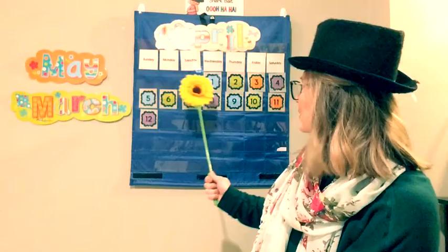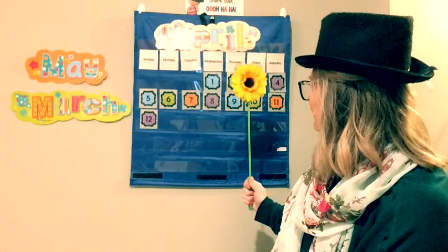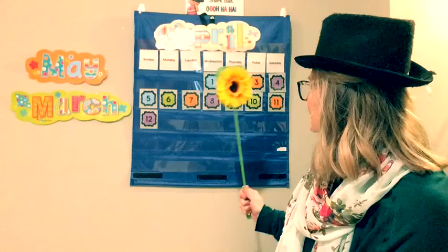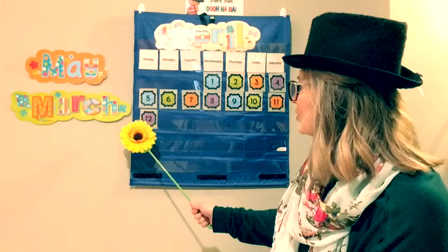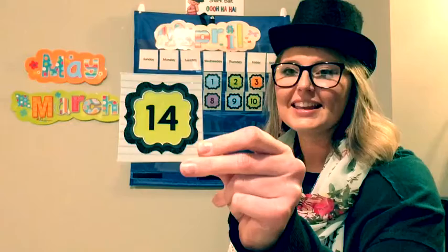With our counting hat on, we are going to count our numbers. We start at the number one, we go to the right, and remember when we come down to the next row, we always go back to the beginning. One, two, three, four, five, six, seven, eight, nine, ten, eleven, twelve, thirteen. And thirteen is a one and a three. Today's not the thirteenth — yesterday was the thirteenth. I forgot, we didn't have school yesterday because it was Easter Monday. Today is Tuesday, number fourteen — a one and a four.